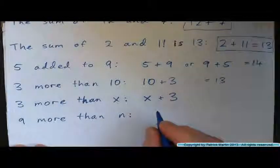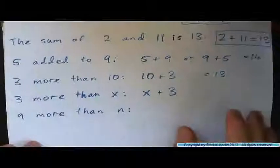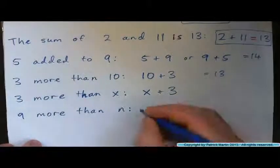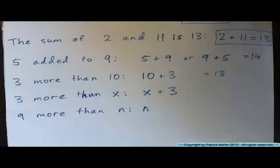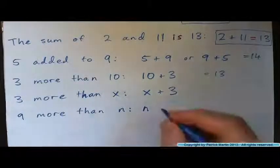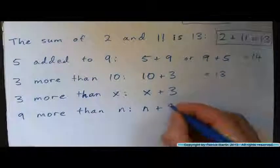Three more than n, or sorry, nine more than n, where n represents some number, would be n, and then what? Nine more than n, the number n plus nine, right?